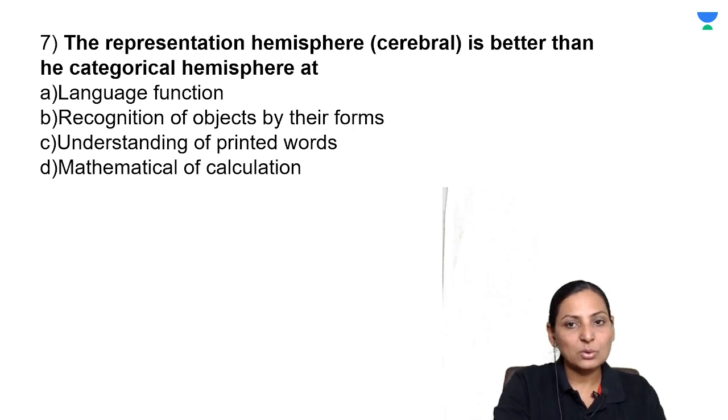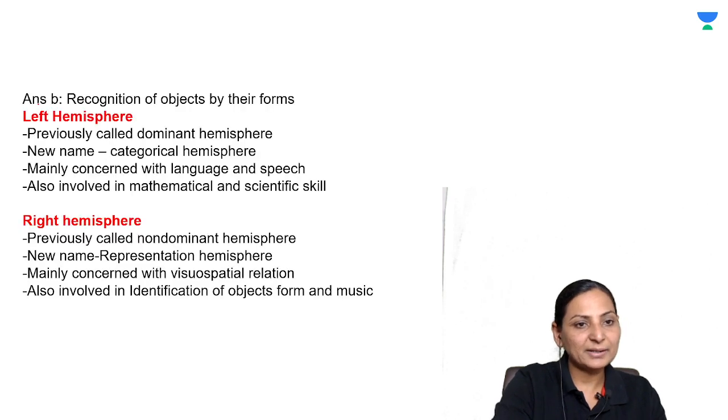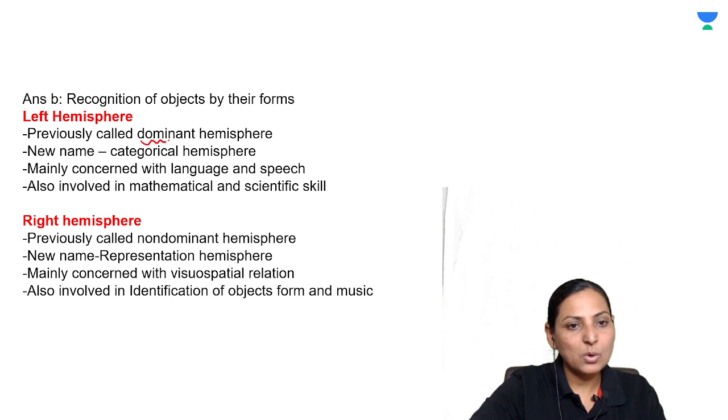The representational hemisphere is better than the categorical hemisphere at what? Options are language function, recognition of objects by their forms, understanding of printed words, or mathematical calculation. The correct answer is recognition. The left hemisphere, initially called the dominant hemisphere, now is called the categorical hemisphere, concerned mainly with language, speech, mathematical and scientific skills. Right hemisphere, initially called the non-dominant hemisphere or representational hemisphere, is mainly concerned with visuospatial relationship, identification of objects, music.